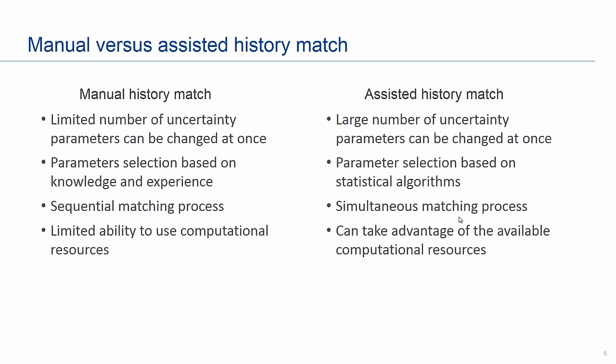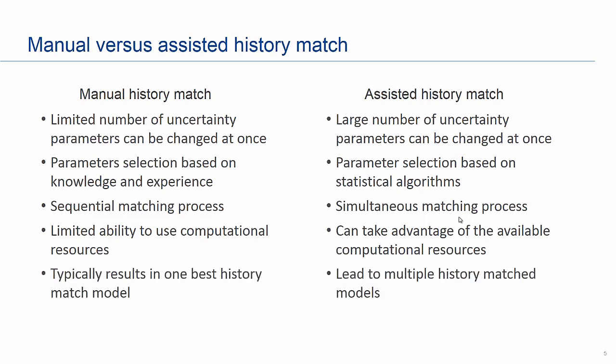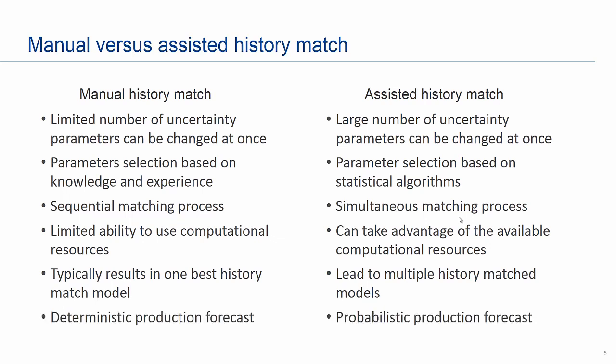In manual history matching you are only running one variant of the model, so you cannot take advantage of available computational resources. In assisted history matching you can submit multiple variants simultaneously, fully utilizing computational resources. Manual history matching typically results in one best history match model, while assisted history matching helps you identify multiple history match models. Because you only have one model in manual history matching, your production forecast is deterministic, whereas assisted history matching allows you to produce probabilistic production forecasts.